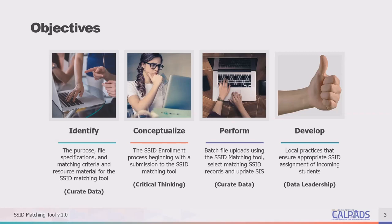The specific skills needed to research, organize, and plan are related to curating data. We would also like for you to be able to conceptualize the SSID enrollment process, beginning with a submission to the SSID matching tool. It takes critical thinking skills to understand and explain the relationship and the flow of data between CALPADS and your student information system.